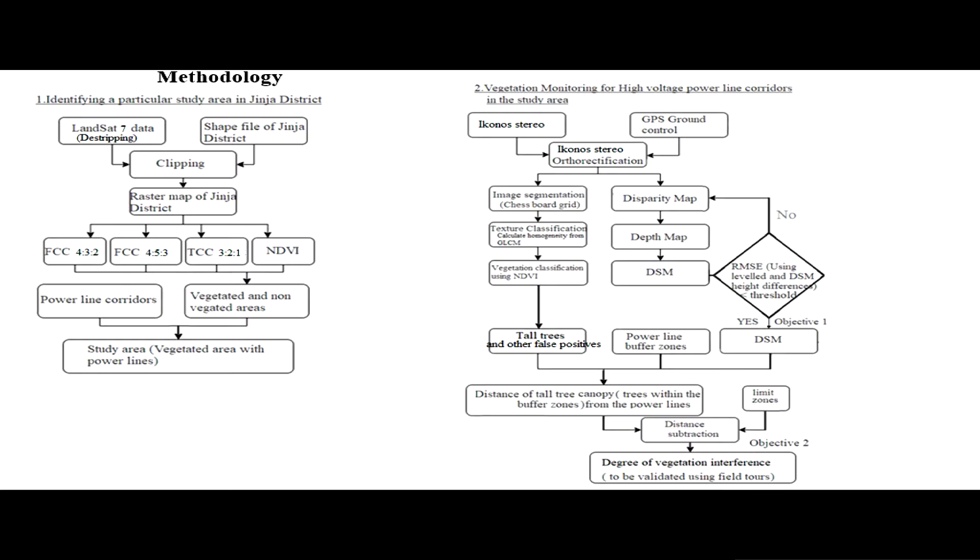The data needed destriping. I used the shape file of Jinja district, clipped it, and got the raster map of Jinja district. I used various false color composites together with NDVI data. The power line corridor information I got from UETCL and Umeme.